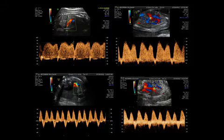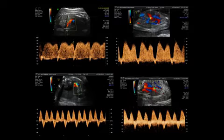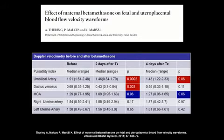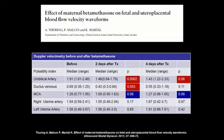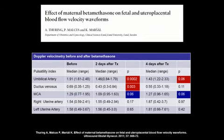If the ductus venosus is still normal and we have a small baby, what can the MCA provide? Most of these fetuses will be treated with steroids for lung maturation. A paper from Professor Marsal's group shows that after steroids, Doppler parameters change — umbilical artery, ductus venosus, and MCA all change, though not at the same rate. This change remains even four days after treatment. Every time we analyze Doppler data we must consider whether that fetus received treatment beforehand.